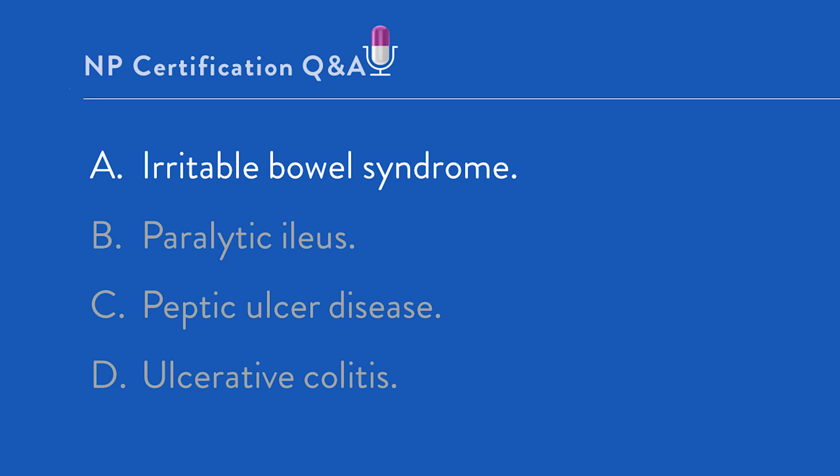With paralytic ileus, once it resolves and the person defecates, they'll often say their belly pain is much better. But remember, paralytic ileus is sudden, acute onset belly pain with an identifiable risk factor — such as recent surgery, particularly with opioid use post-op, or a recent GI infection. Also remember, we're talking about an outpatient clinical encounter.